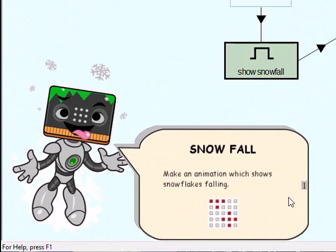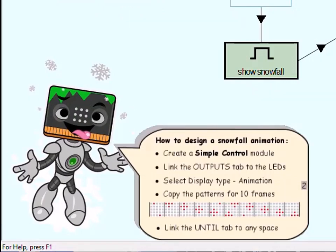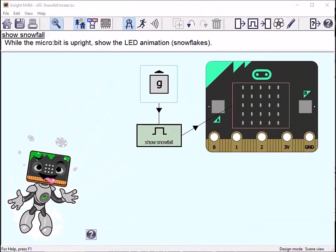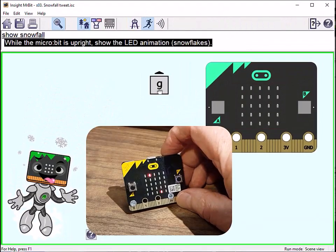Now an animation. Here you create several images in a sequence, which shows when the microbit moves to an upright position.